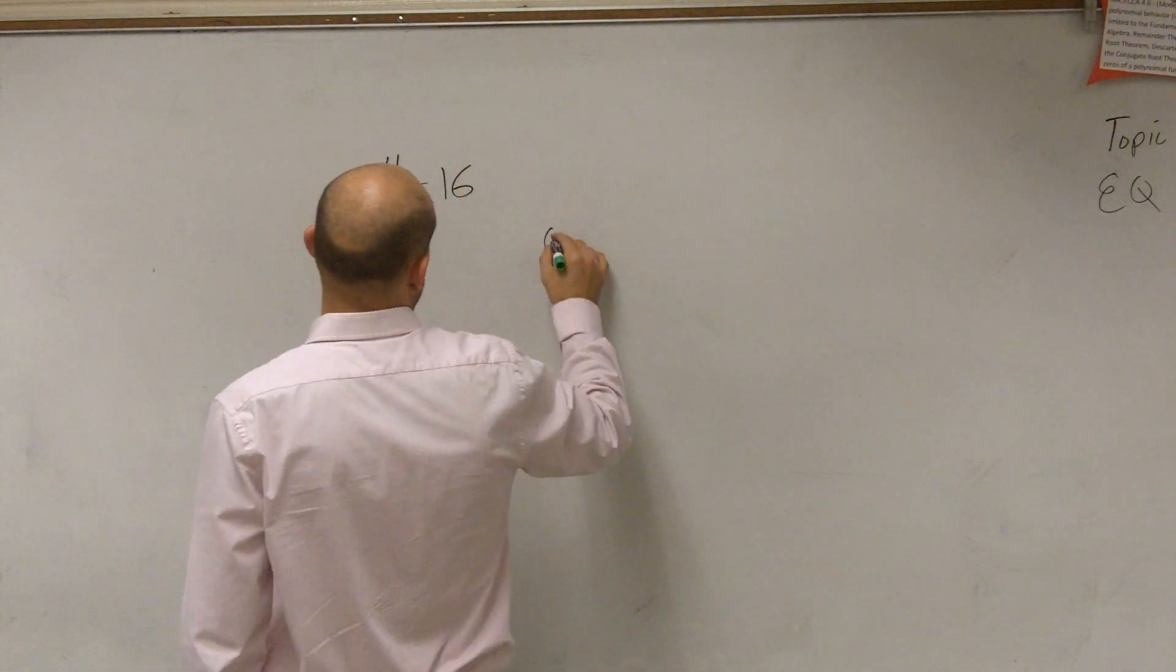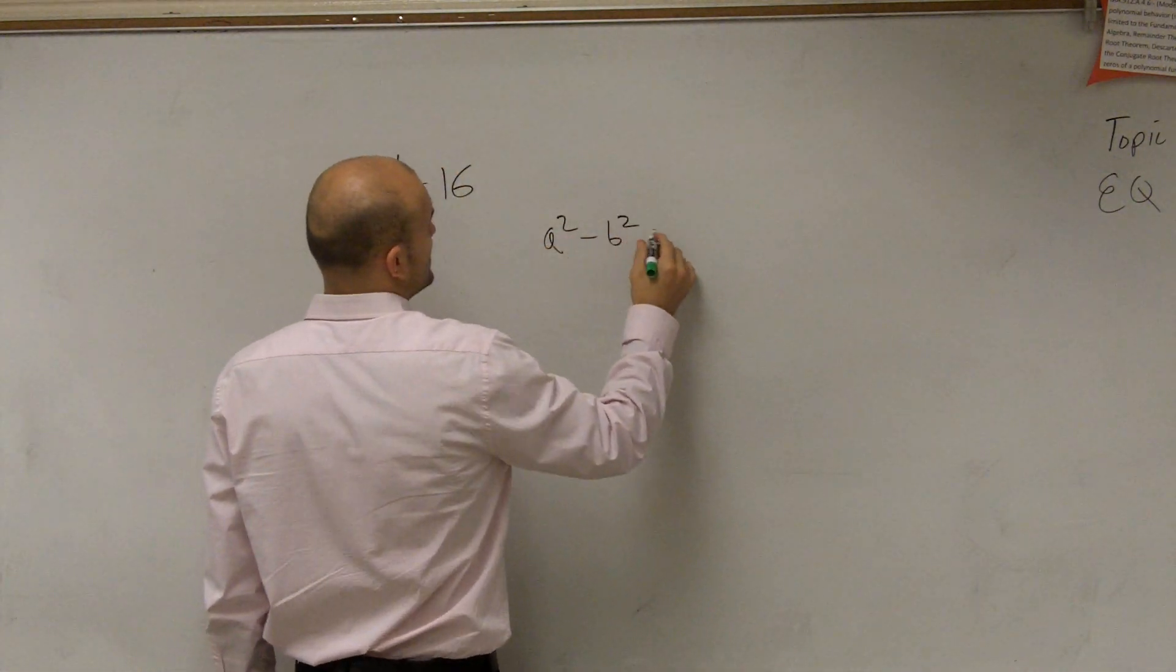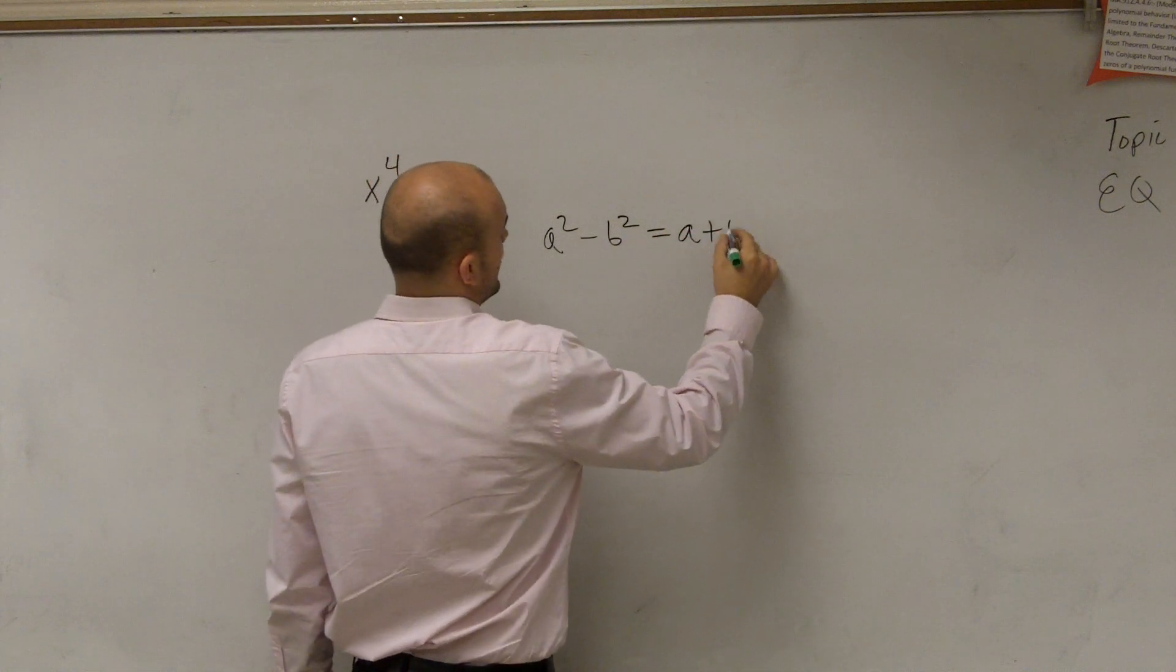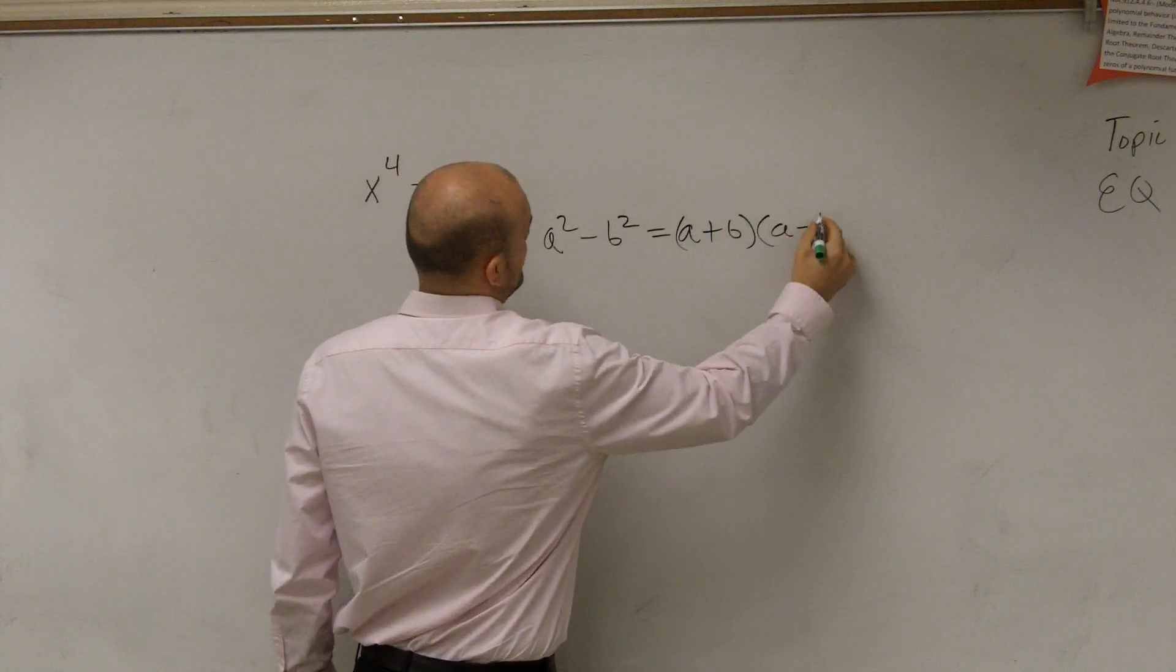And remember, the difference of two squares says a squared minus b squared equals a plus b times a minus b.